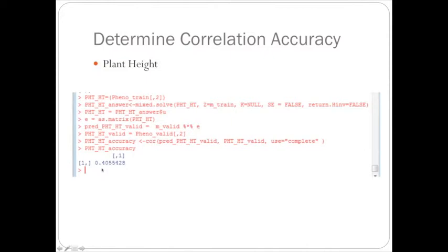So you can see that the accuracy for plant height is 0.4, which is greater than the 0.25 that we saw for yield, which is expected since plant height has a much higher heritability. And so you expect the correlation accuracy to be higher.